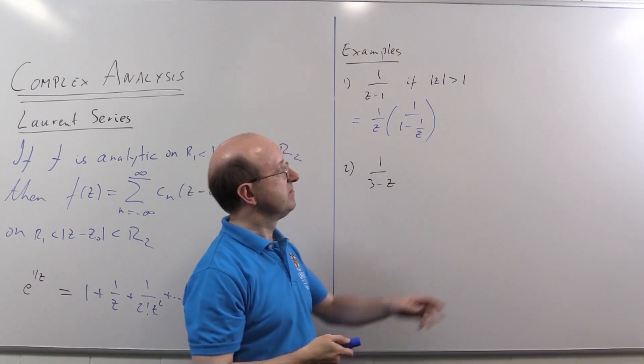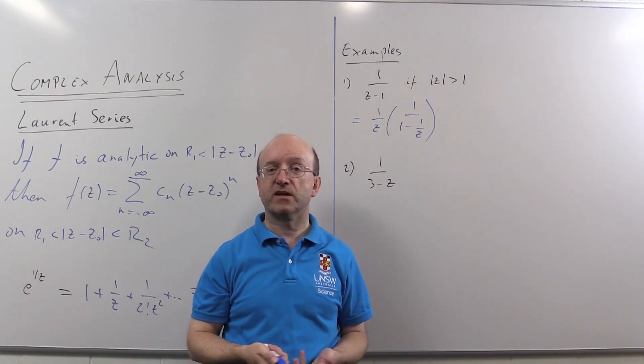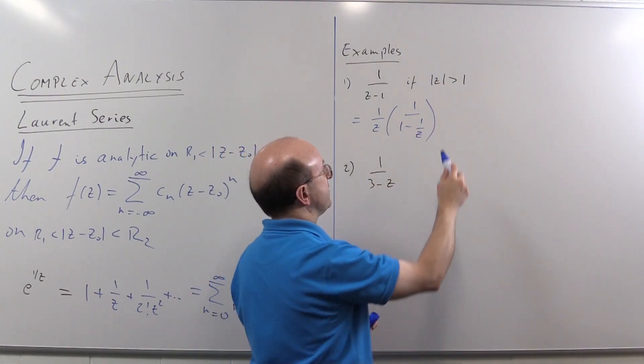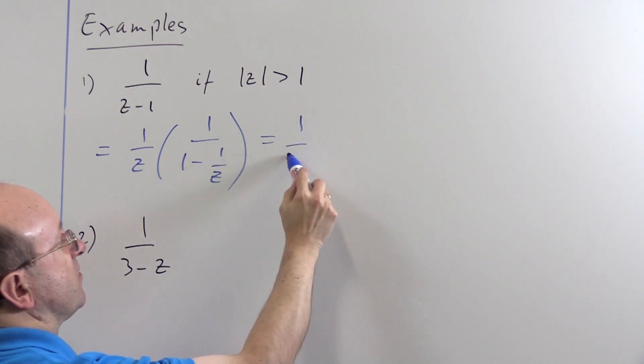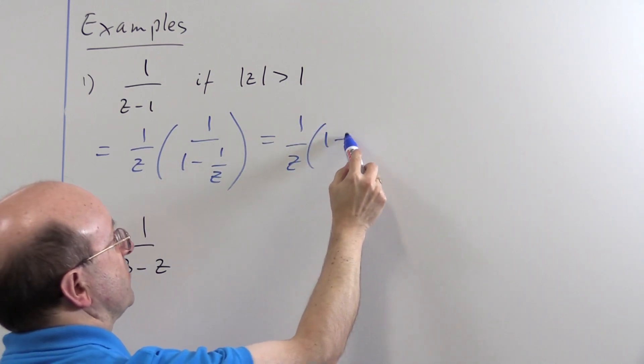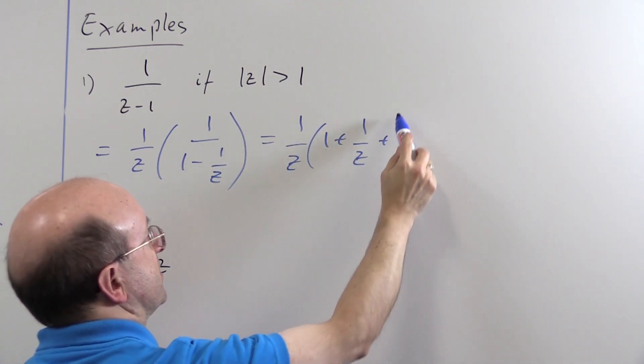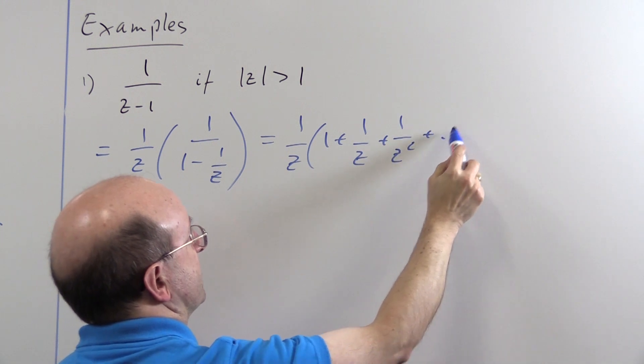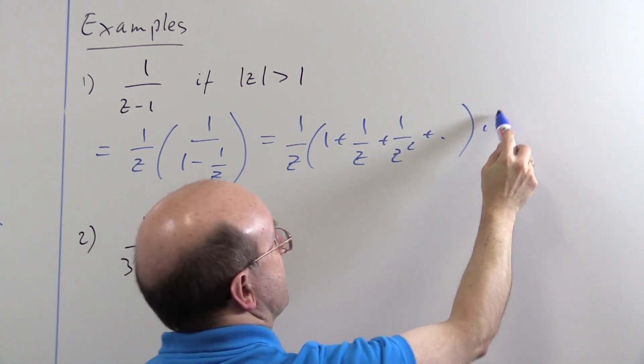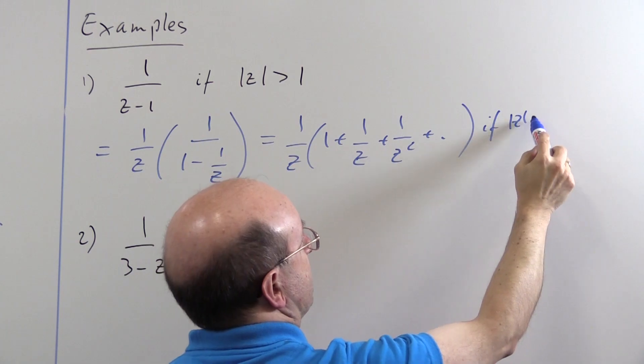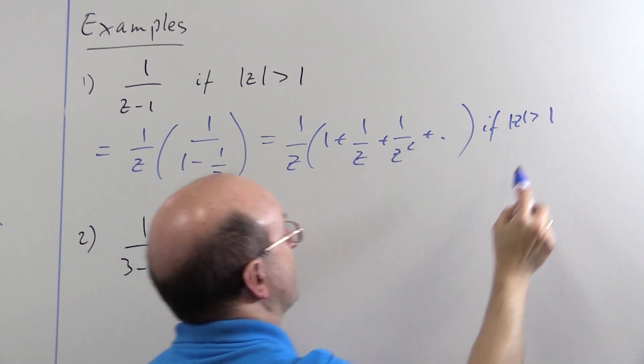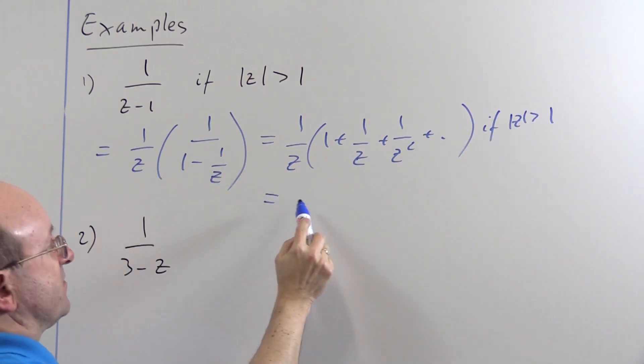And then we can expand this in powers of 1/z as long as |1/z| is less than one, but that of course is precisely what this region is. So we're going to get 1 upon z into 1 plus 1 upon z plus 1 upon z squared if |z| bigger than one, or in terms of sigmas if you want.